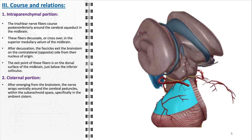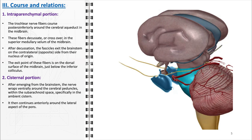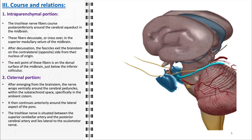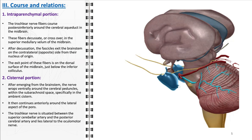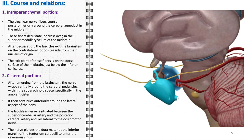The cisternal portion begins as the nerve fibers emerge from the brainstem, navigating through the subarachnoid space within the ambient cistern as they wrap ventrally around the cerebral peduncles. The nerve then continues anteriorly, skirting the lateral aspect of the pons. During this path, the trochlear nerve is strategically positioned between two major arteries — the superior cerebellar artery and the posterior cerebral artery — and lies lateral to the oculomotor nerve. The trochlear nerve's journey culminates as it pierces the dura mater at the inferior margin of the tentorium cerebelli, entering the cavernous sinus.